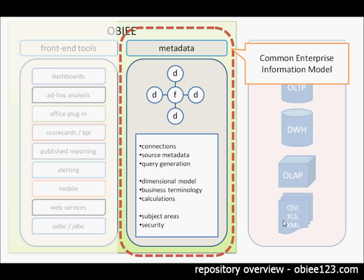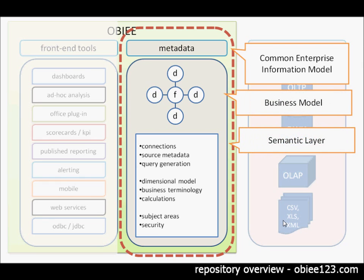There are many references or different names for the metadata of OBIEE so it's often called the common enterprise information model because it's one business model across all the sources of an organization. It's referred to as business model. It's sometimes referred to as semantic layer.